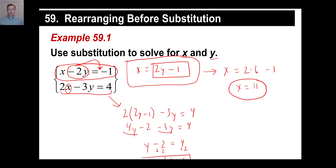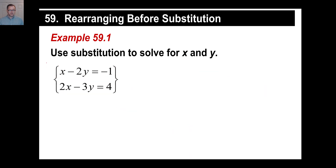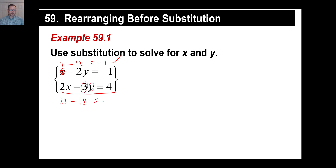You can go back and check your answers in both equations — especially on a standardized test like the SAT or a Saxon test. We said x is 11 and y is 6. Check the first equation: 11 minus 2 times 6 is 11 minus 12, which equals negative 1. That works. Check the second: 2 times 11 is 22, minus 3 times 6 is 18. Is 22 minus 18 equal to 4? Yes. Both equations check out.